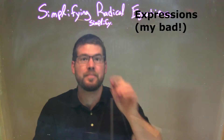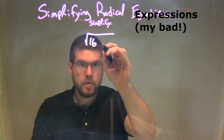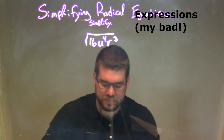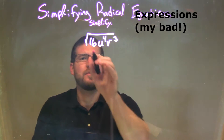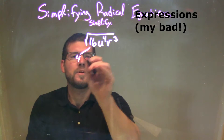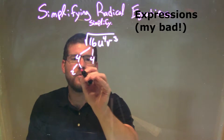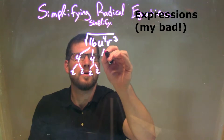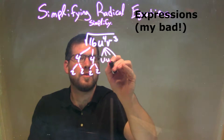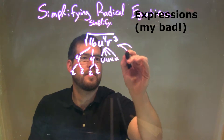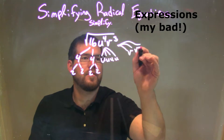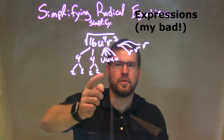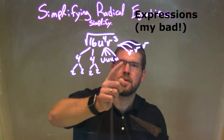So if I was given this problem — the square root of 16u to the 4th times v to the 3rd — let's break down 16 into a prime factorization. 16 is just 4 times 4, and 4 and 4 are 2 and 2, so 16 is just 2 times 2 times 2 times 2. U to the 4th is just u times u times u times u, and v to the 3rd is just v times v times v. So the prime factorization of 16u to the 4th times v to the 3rd is 2 times 2 times 2 times 2 times u times u times u times u times v times v times v.